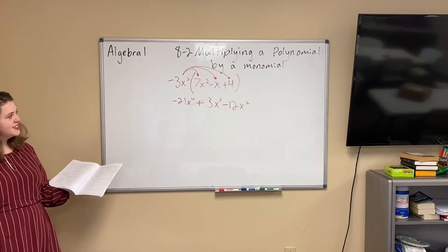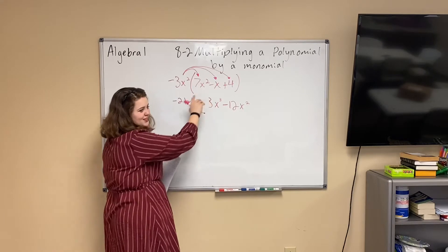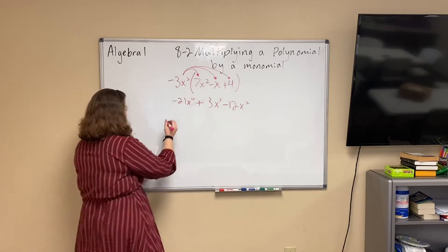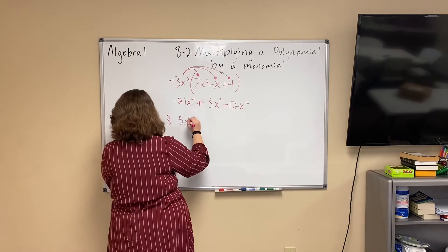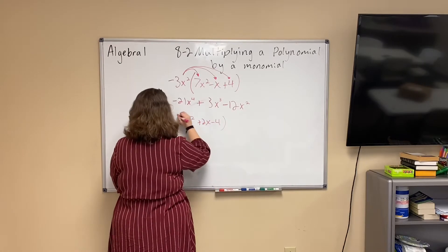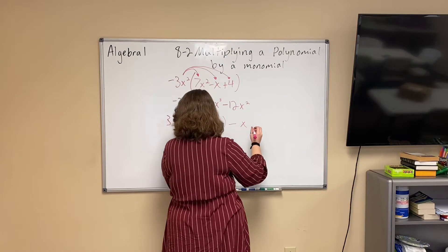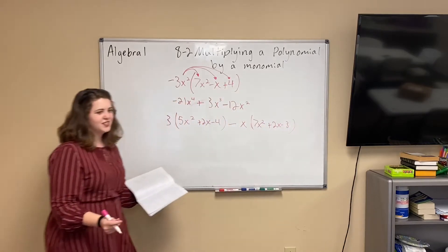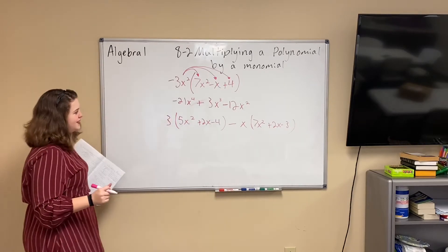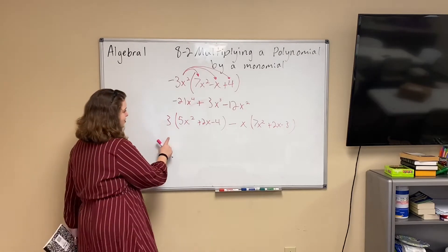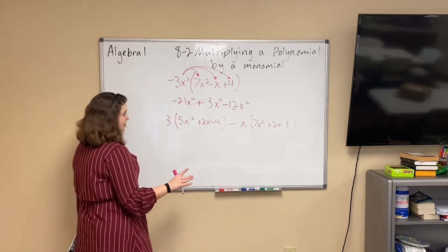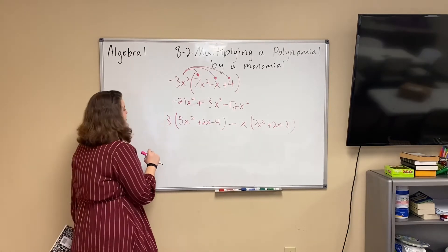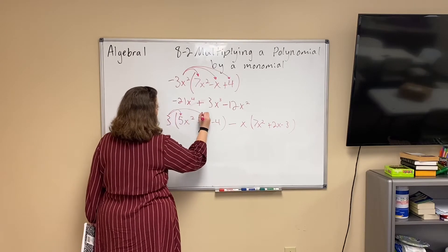One thing you might end up seeing — they're not always so simple where it's just one thing times one thing. Sometimes they're really big and you'll have to distribute more than once. For example, something like: 3 times (5x squared plus 2x minus 4) minus x times (7x squared plus 2x minus 3). We're going to first distribute both of them separately, because in our order of operations we always take care of parentheses first, then multiplication, then addition and subtraction.